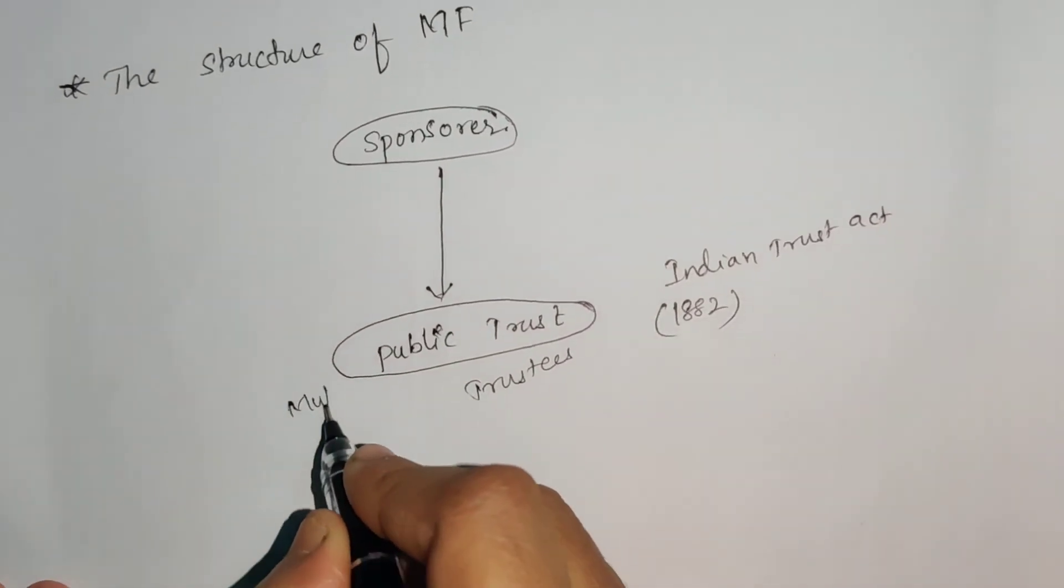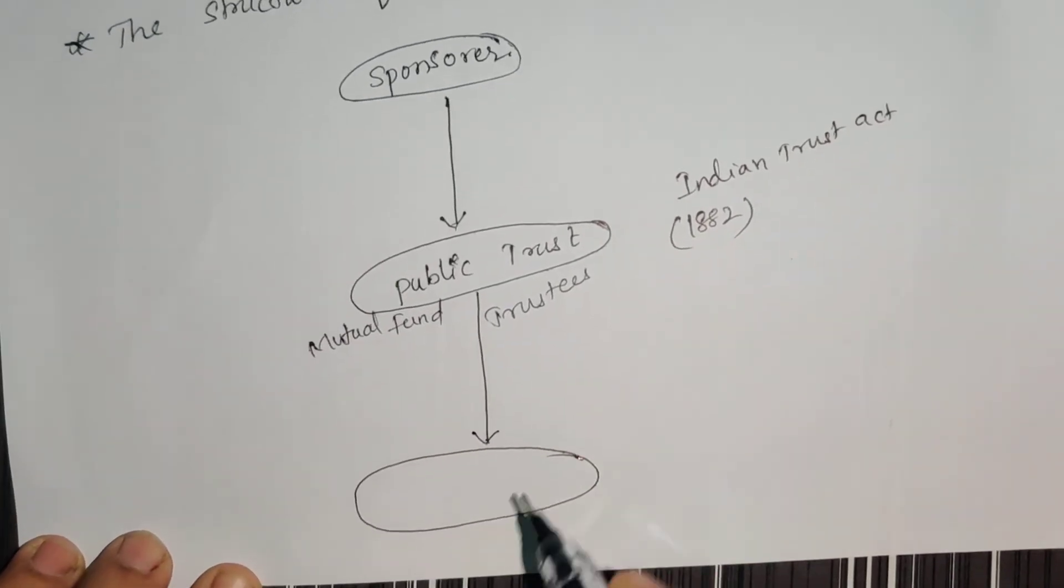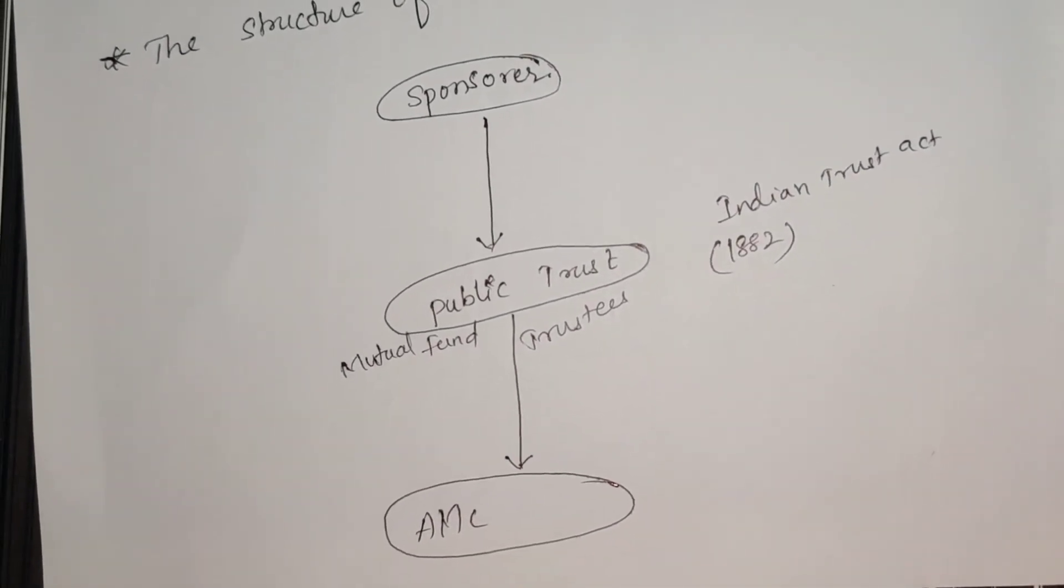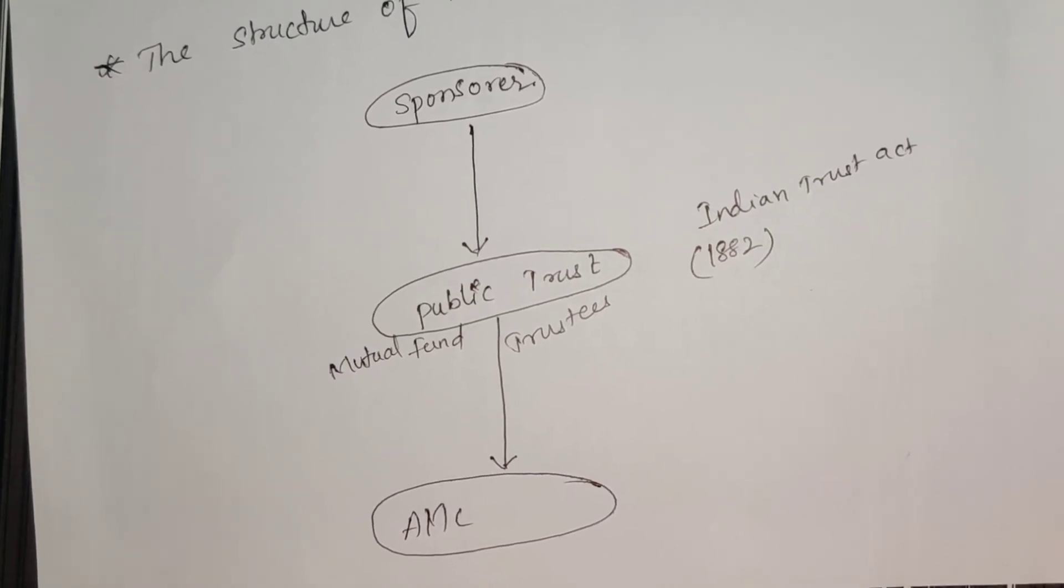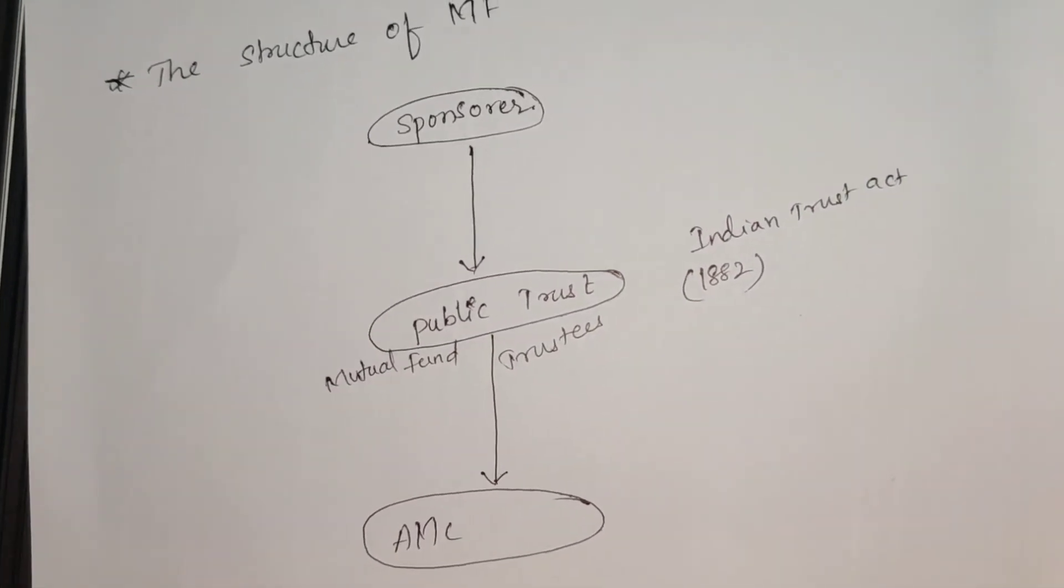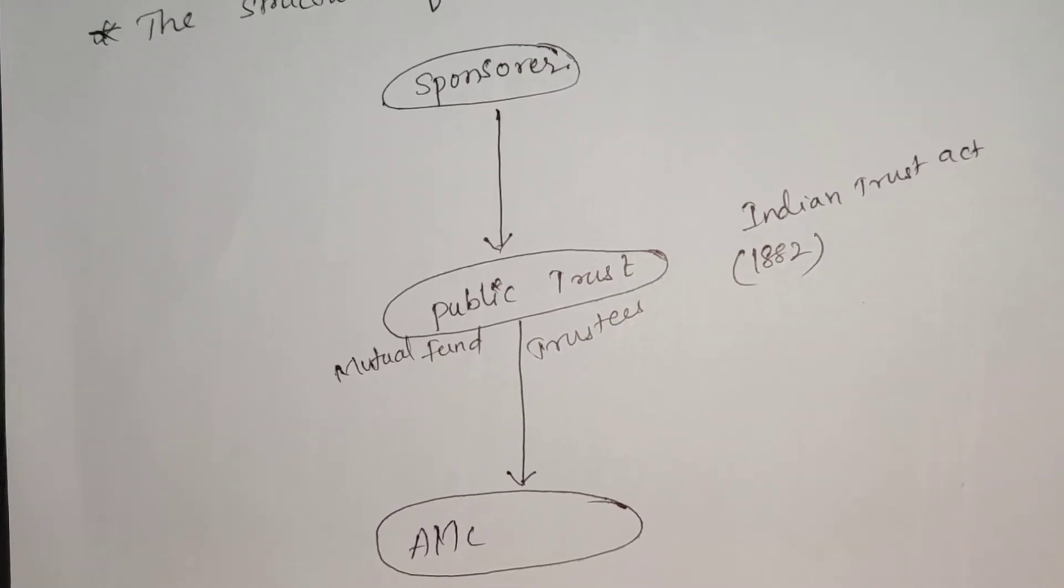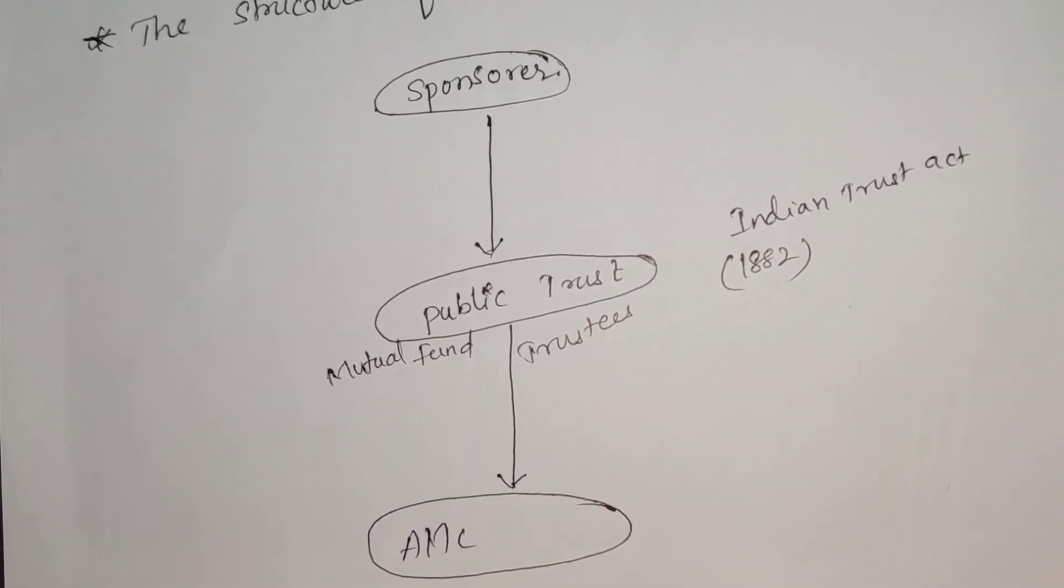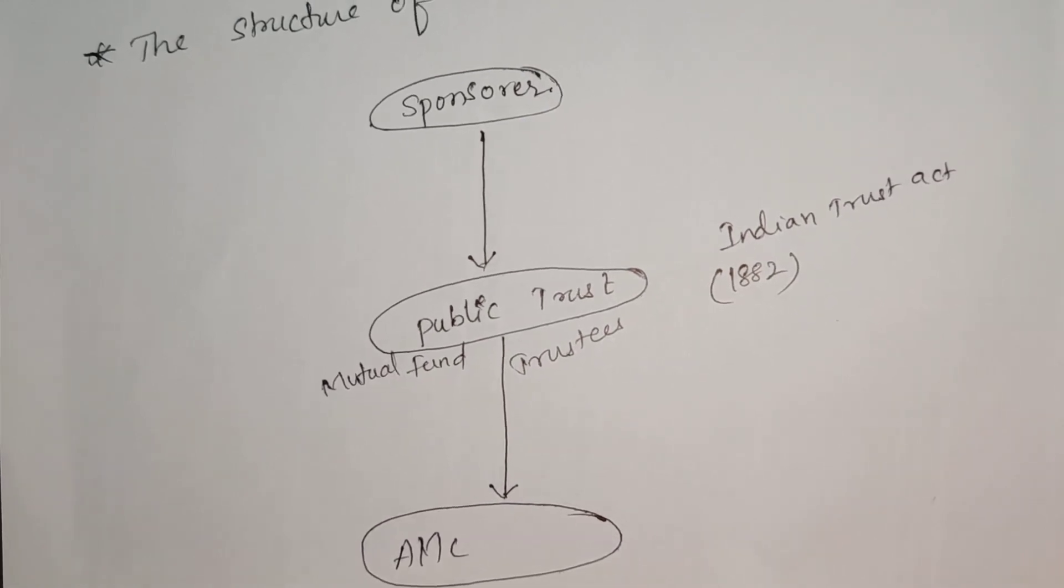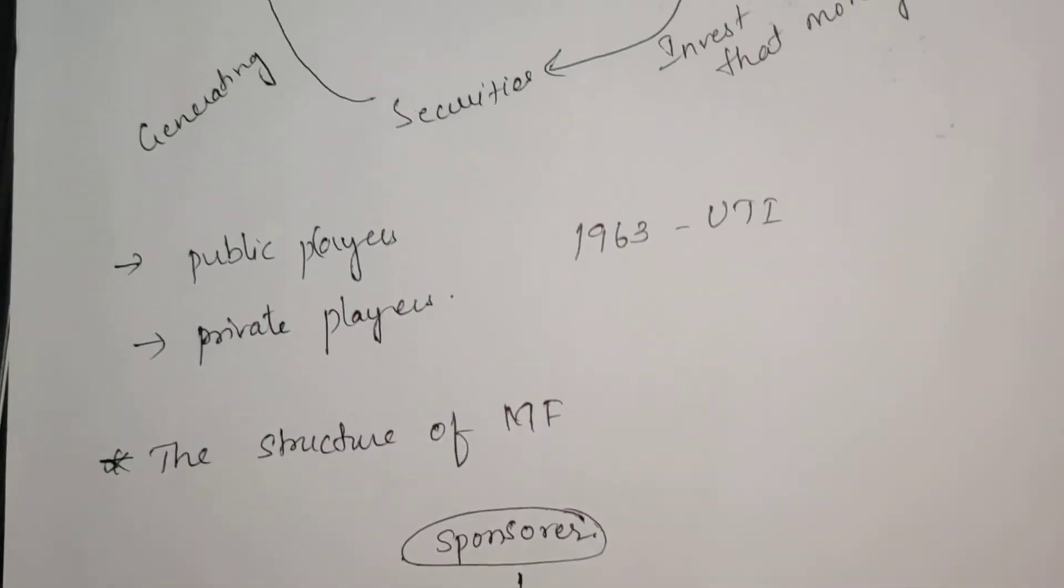it is considered a mutual fund. That mutual fund sets up an AMC—Asset Management Company—which must get approval from SEBI. This is how the structure of a mutual fund takes place. The sponsor and public trust are separate entities acting under guidelines of SEBI, Indian Trust Act, and RBI. These regulatory authorities regulate these bodies, and the structure of mutual funds must work under them.